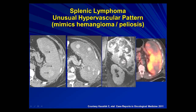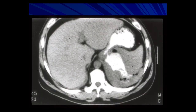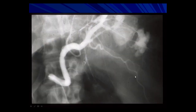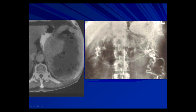An unusual hypervascular pattern in splenic lymphoma can mimic hemangioma or peliosis — very well-demarcated hypervascular lesions. Some unusual complications: one case shows a lymphoma necrosing and rupturing into the stomach, so oral contrast from the stomach has gotten into the necrotic splenic lymphoma. Another case shows splenic vein thrombosis complicating splenic lymphoma with varices and absent splenic vein on the late-phase angiogram. Another case shows necrotic splenic lymphoma with gas within, which turned out to have bacterial and/or candidal superinfection.